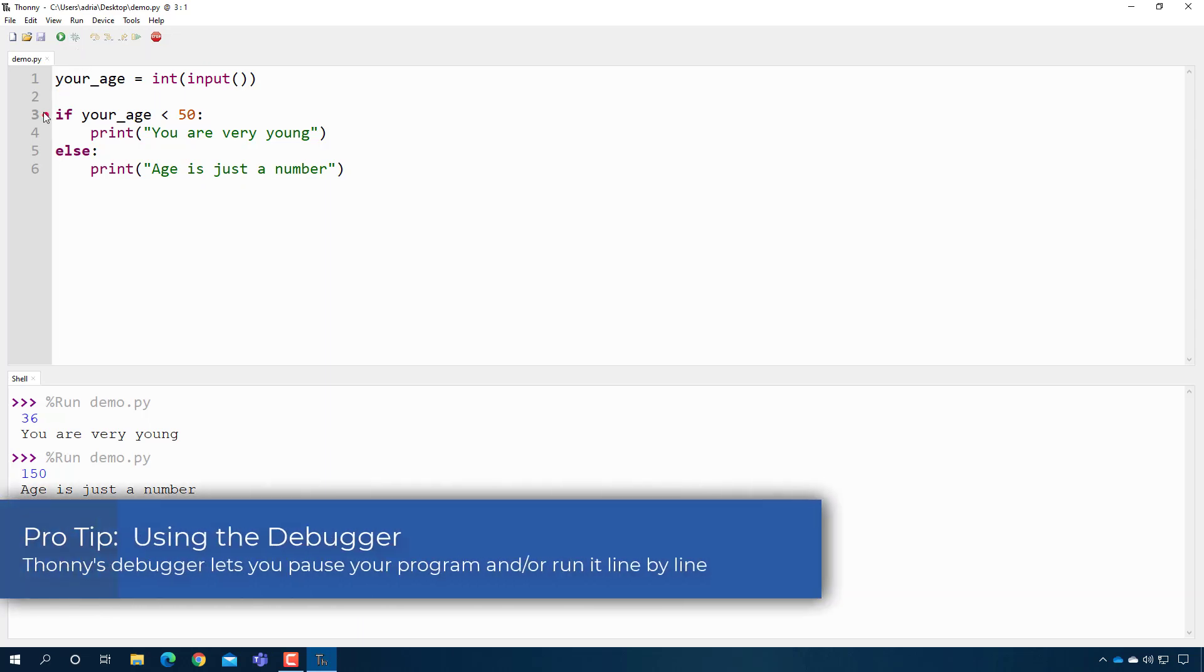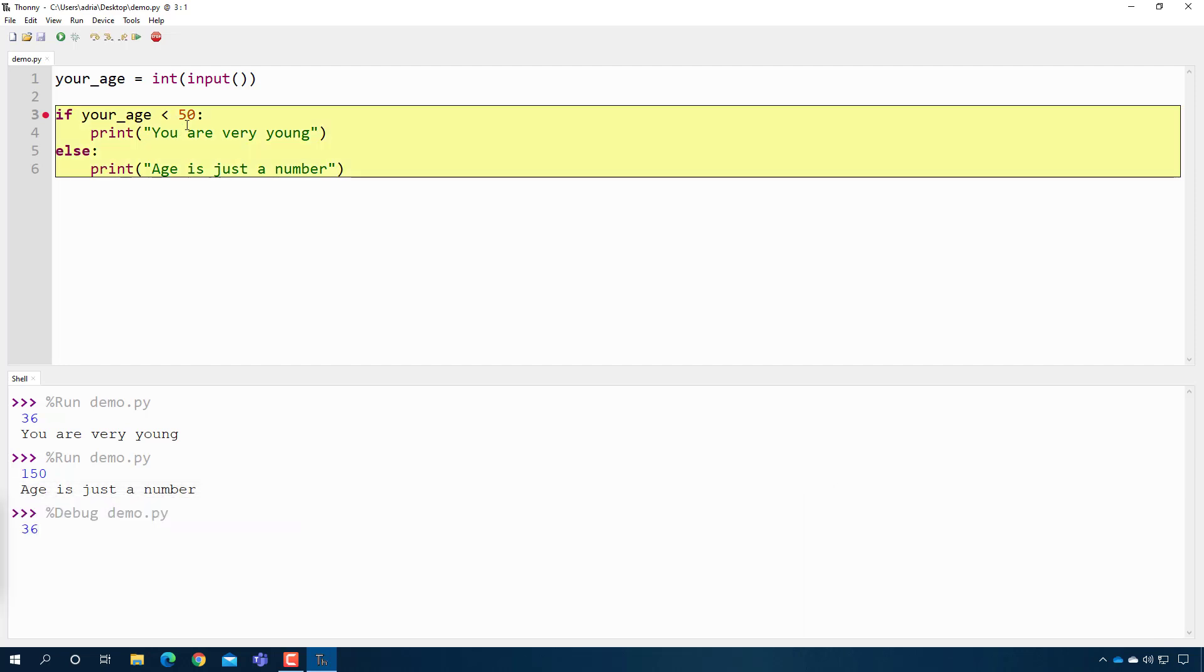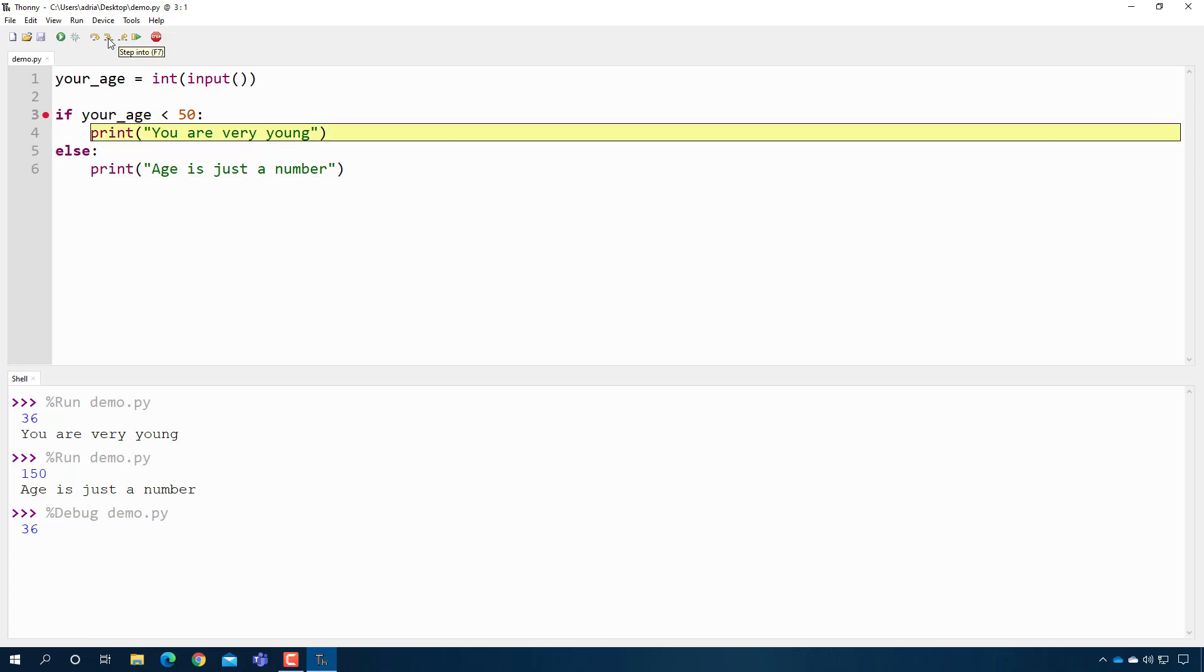So what will happen is it will execute the code and it will pause at this line so we can see what's going on. So I'm just going to type 36, and when I press enter you can see it's highlighted, and now I can actually, there's a button here called step into, and if I click it you'll actually see it evaluate. So now it's looking at your_age and it's saying well what did the user put in for your_age, and this is oh it's 36, and then now it evaluates: is 36 less than 50? Yes it is, so it's true, and it'll go and actually print you are very young.